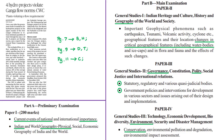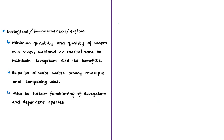Moving on to the next discussion. This news article is about the violation of ecological flow in the Ganga by a few hydropower projects. We will discuss the concept of ecological flow, the ecological flow notification for Ganga, and the present issue. The relevant syllabus is given here for your reference. Ecological flow is also called e-flow or environmental flow. Environmental flow is the minimum quantity and quality of water in a river, wetland, or coastal zone required to maintain ecosystems and their benefits.